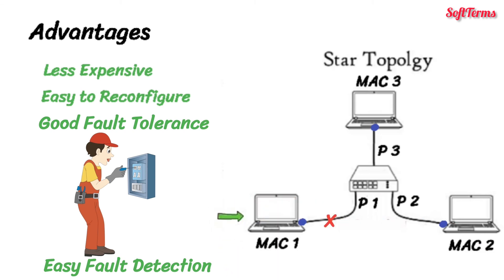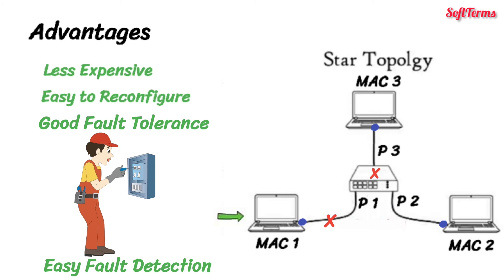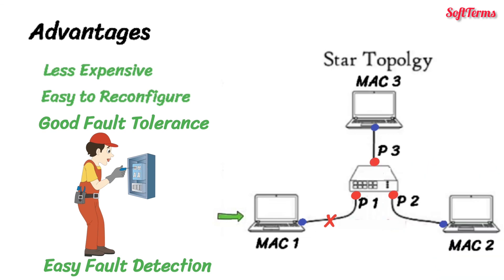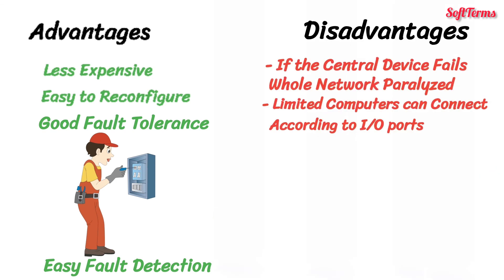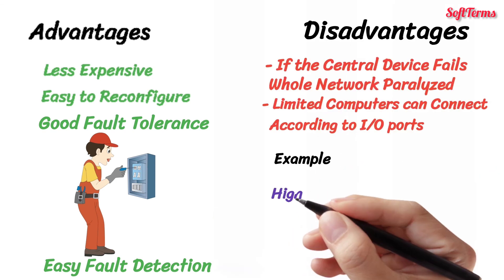However, if the central device goes down, the whole network is paralyzed. One more limitation of star topology is that the number of computers in a network is limited by the number of input-output ports in the central device. An example of star topology is a high-speed LAN.